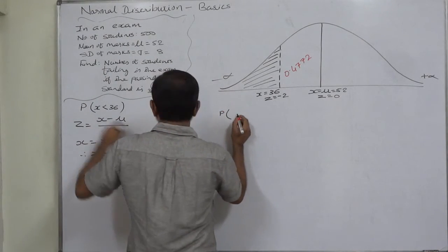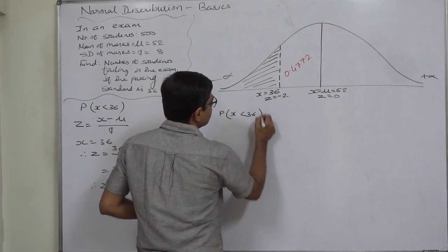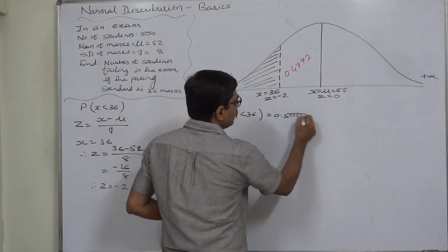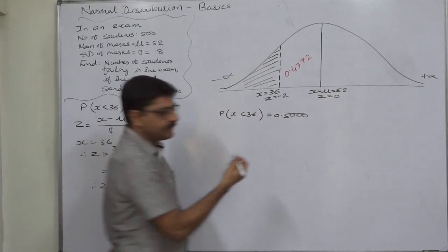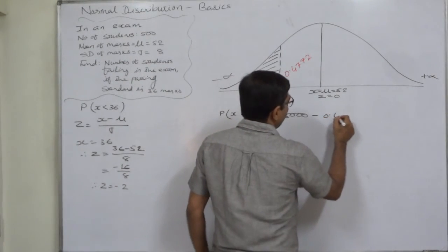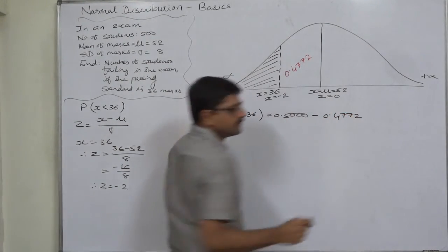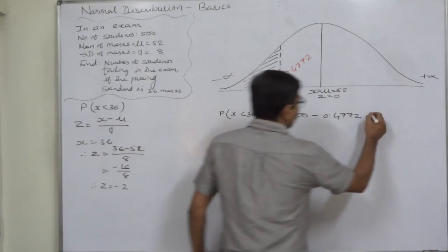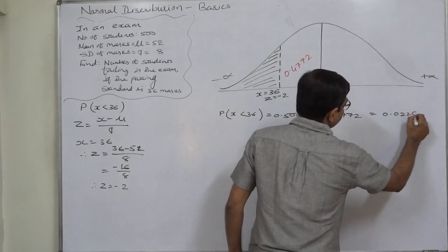Probability of X less than 36 is 0.5, the area of the entire left-hand side, minus 0.4772, the area in which we are not interested. It comes to 0.0228.